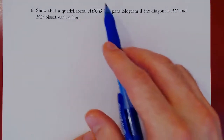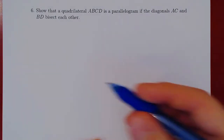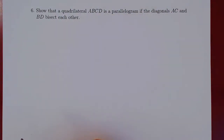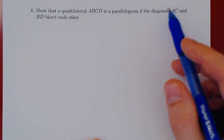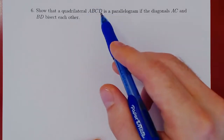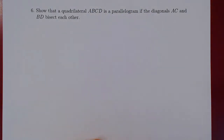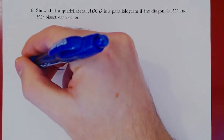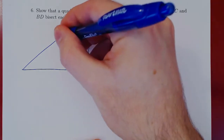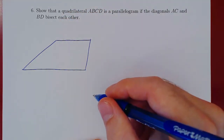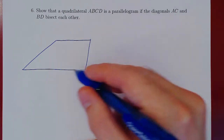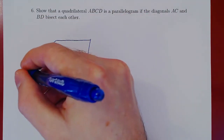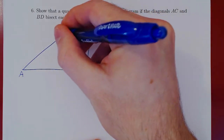The only thing we have by assumption is a quadrilateral where the diagonals bisect each other. So we can't draw a parallelogram off the bat, because that is what we want to show — that if the diagonals bisect each other, then the quadrilateral ABCD is a parallelogram. So we draw an arbitrary quadrilateral and label the vertices counterclockwise: A, B, C, and D.